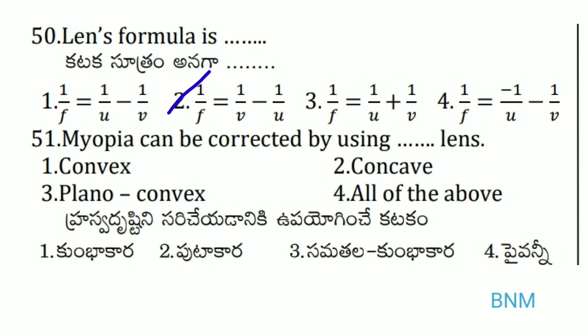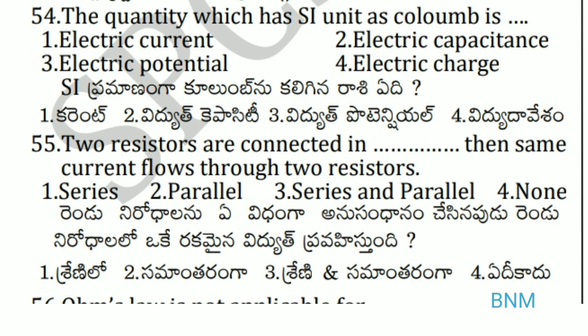Myopia can be corrected by using which type of lens? Short-sightedness (myopia) is corrected using a concave lens. So the 2nd option — concave lens — is the right answer. Myopia is corrected by using a concave lens.